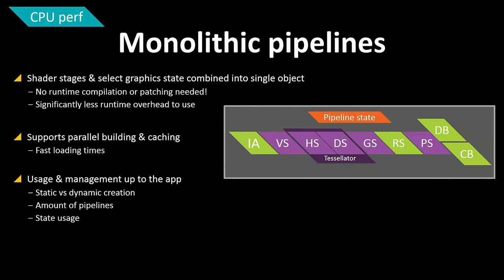The second concept is pipelines. In Mantle, all shader stages are merged into a single object together with important pipeline states like render target write masks, alpha blending modes, and select graphics states. This completely avoids runtime shader compilation or patching within the driver. Applications create these objects — they can be created dynamically, but ideally you create them more statically or even cache them on disk, which can significantly improve performance when switching between many shaders.